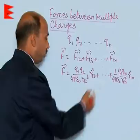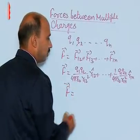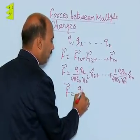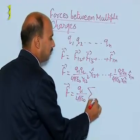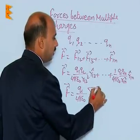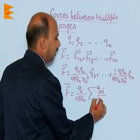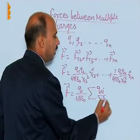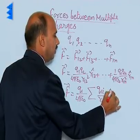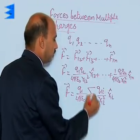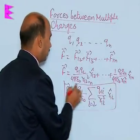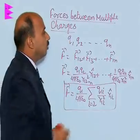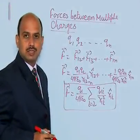So we can write also in this form F is equal to, we can take common Q1 here, 4 pi epsilon naught sigma, here we can write Q1i divided by R1i square R1i unit vector, where i is equal to 2 to n. So this is the total force acting on the charge Q1 due to the presence of the n number of charges.